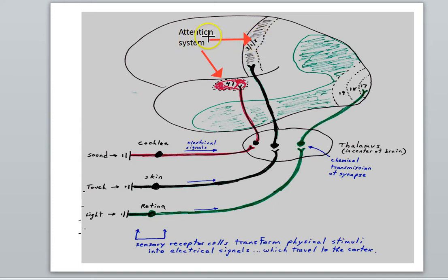So the attention system is a system that can selectively decide which sensory systems are going to get preferred processing. When the attention system is interacting with the sensory system, we are processing that information more thoroughly, and it will enter into our working memory and we'll be conscious of what it is that we are attending to.